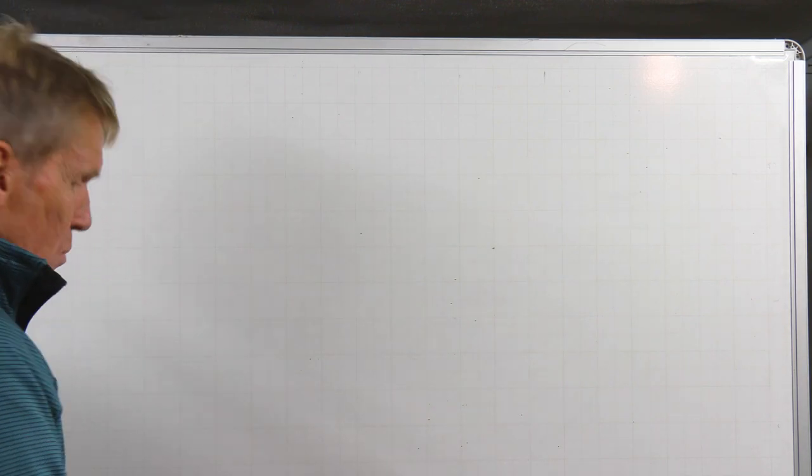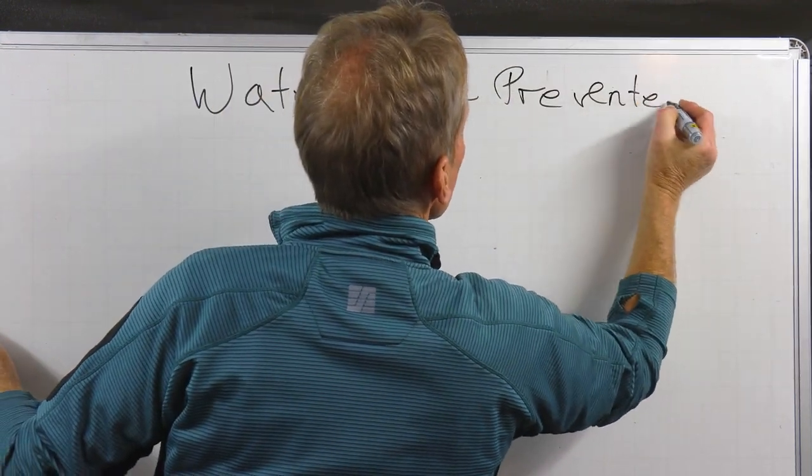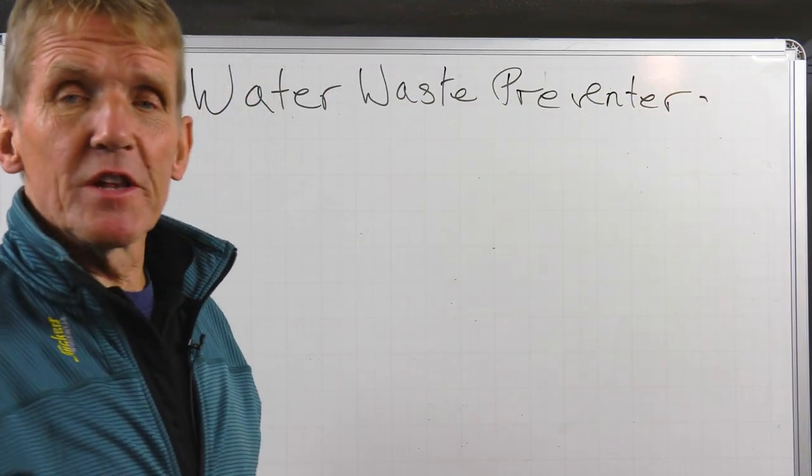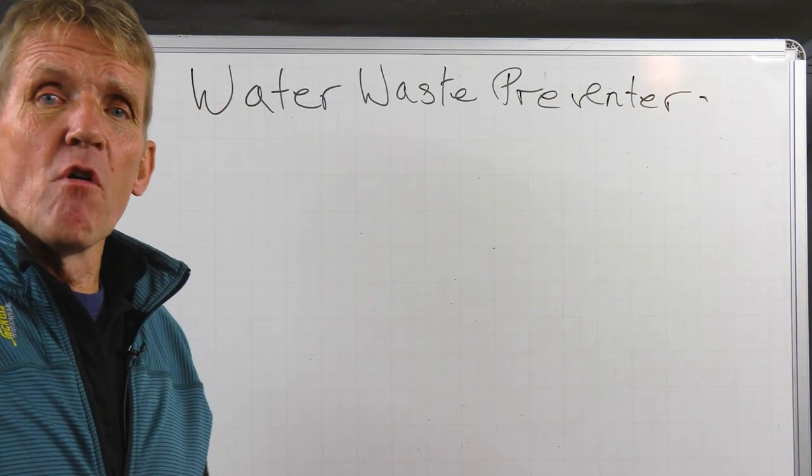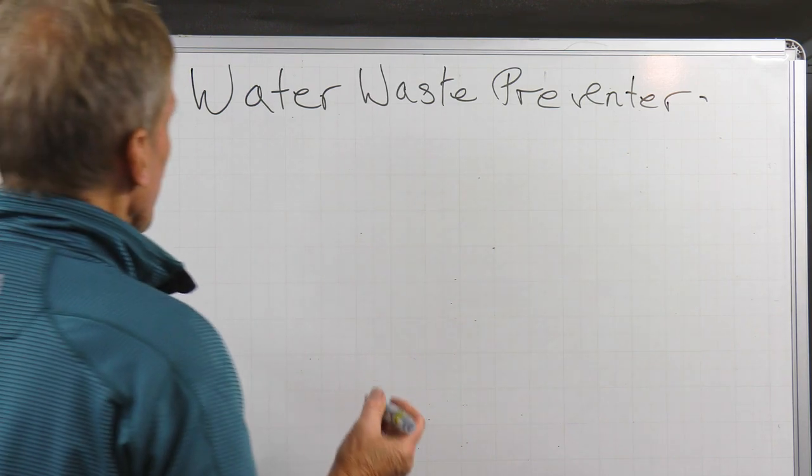Well, let's look at what we call the Water Waste Preventer. Now, the Water Waste Preventer is really the posh name that we learned in college for the flushing WC, or the cistern, or whatever you want to call it.